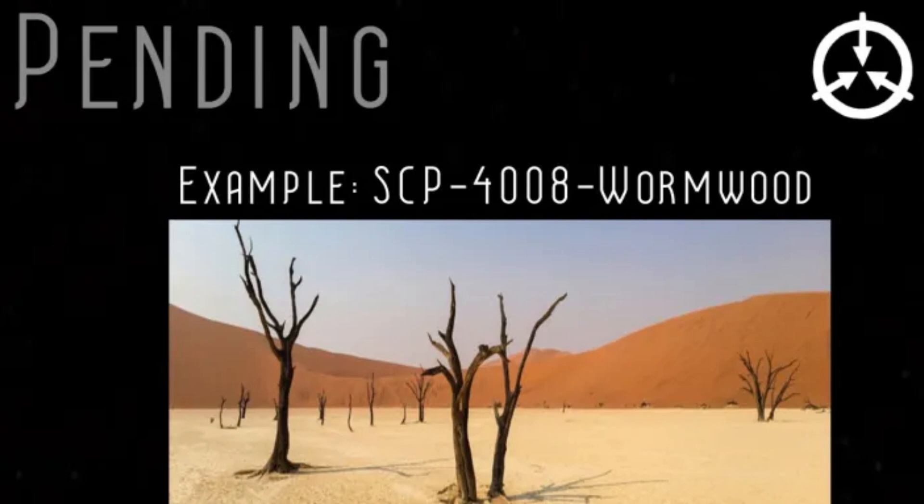Pending class SCPs are SCPs that have not yet been assigned an object class and are labeled as pending. This is used to indicate that the Foundation does not currently have enough information to assign an object class to the anomaly. This is a deliberate decision to emphasize that research is ongoing, and is not the same as not knowing what class it falls into.